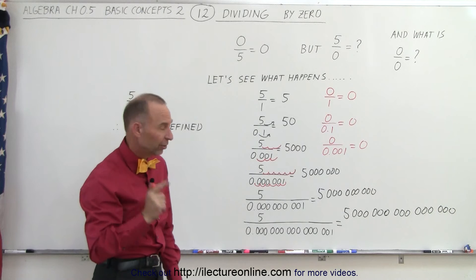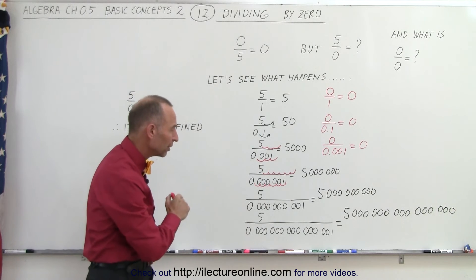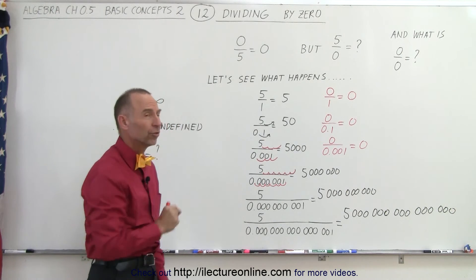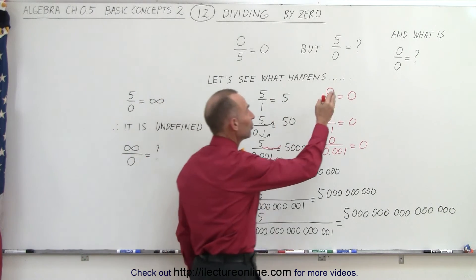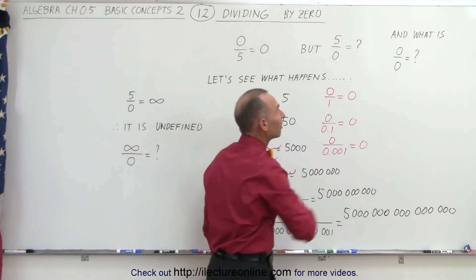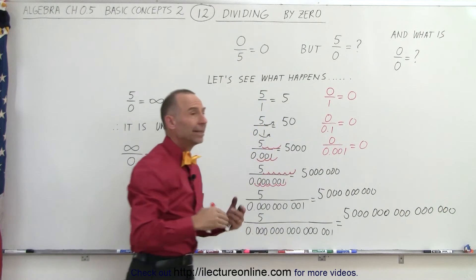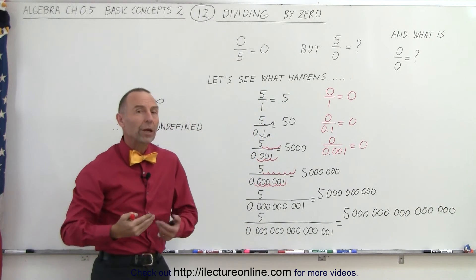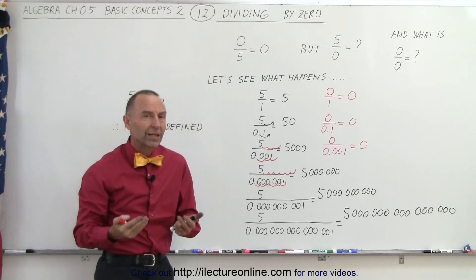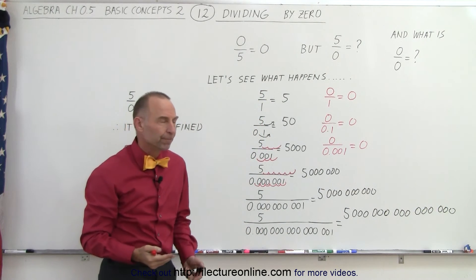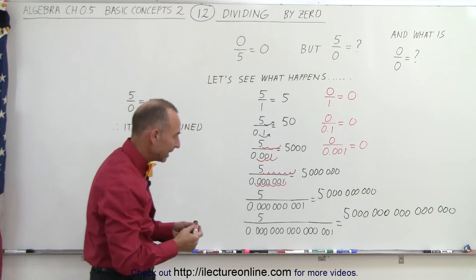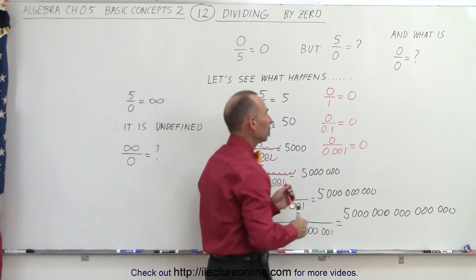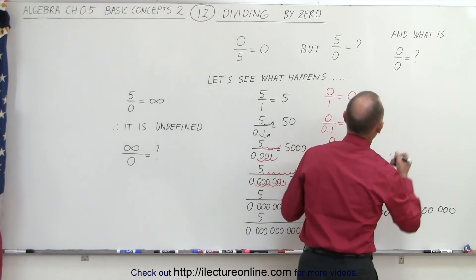Until we make the denominator equal to zero. Then we get zero divided by zero, and now there's no way to determine what that is equal to. Therefore, they call that an indeterminate form.